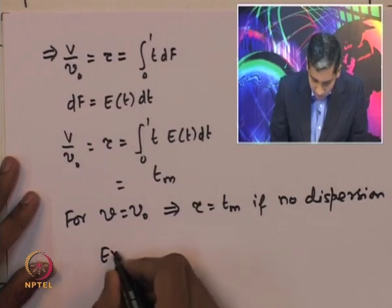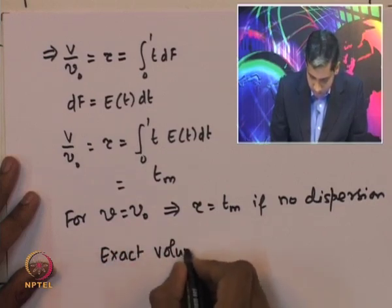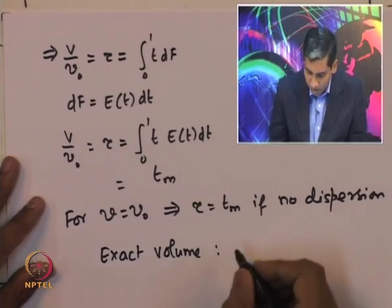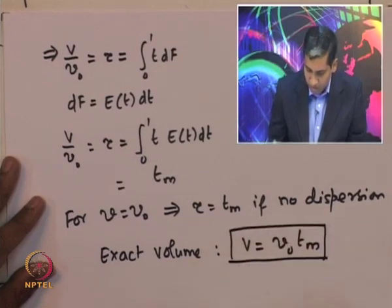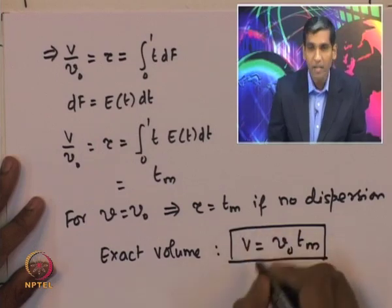Therefore, the exact volume of the reactor, if there is no dispersion, is given by V̇₀ multiplied by the average residence time. If the average residence time is known, one can calculate the exact volume of the reactor through which the fluid is flowing. Note that V̇ = V̇₀ is true for gases only if the reactor is operated under constant pressure, isothermal conditions, and if the number of moles does not change due to reaction.